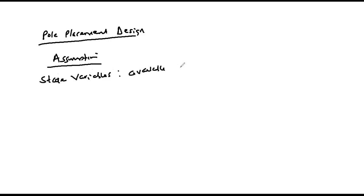The pole placement design technique also helps us to include the initial conditions of the system if necessary. The assumption under the pole placement design technique is that all the state variables are available for measurement and feedback in the given system.